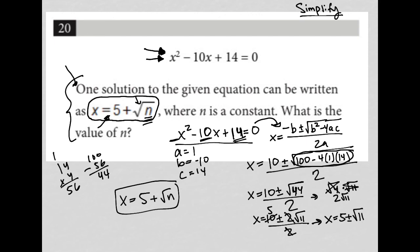Now that tells me that I could separate this into x equals 5 plus root 11 and 5 minus root 11. This looks a lot like this, and therefore n must be equal to 11, and that is our answer.